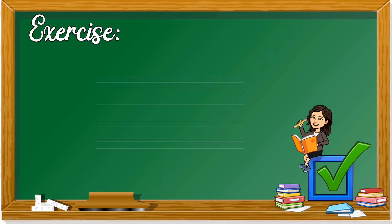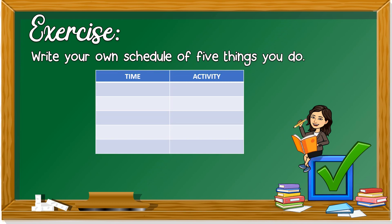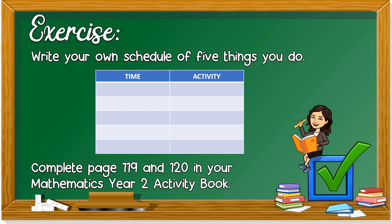The exercise for today: write your own schedule of five things you do. Record the time — for example, seven in the morning you wake up, 7:15 in the morning you brush your teeth — any five things. Write it in your mathematics exercise book. Then complete pages 119 and 120 in your Mathematics Year 2 activity book. Thank you class, that is all for today. See you again on the next session. Goodbye!